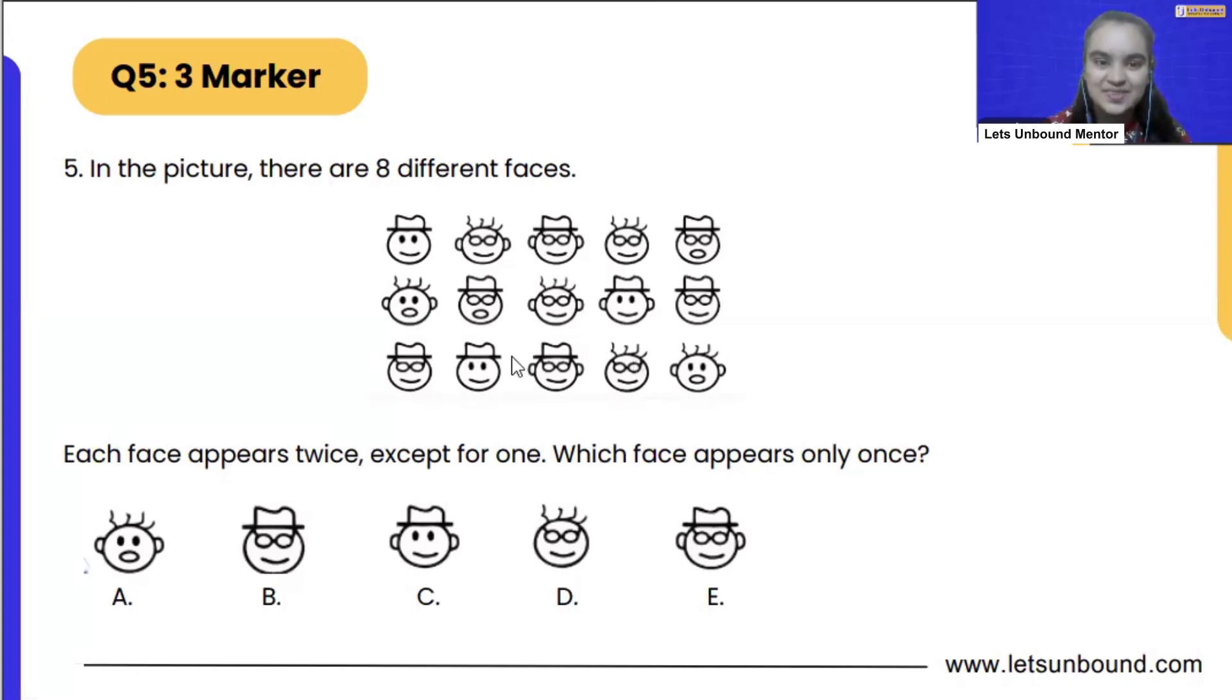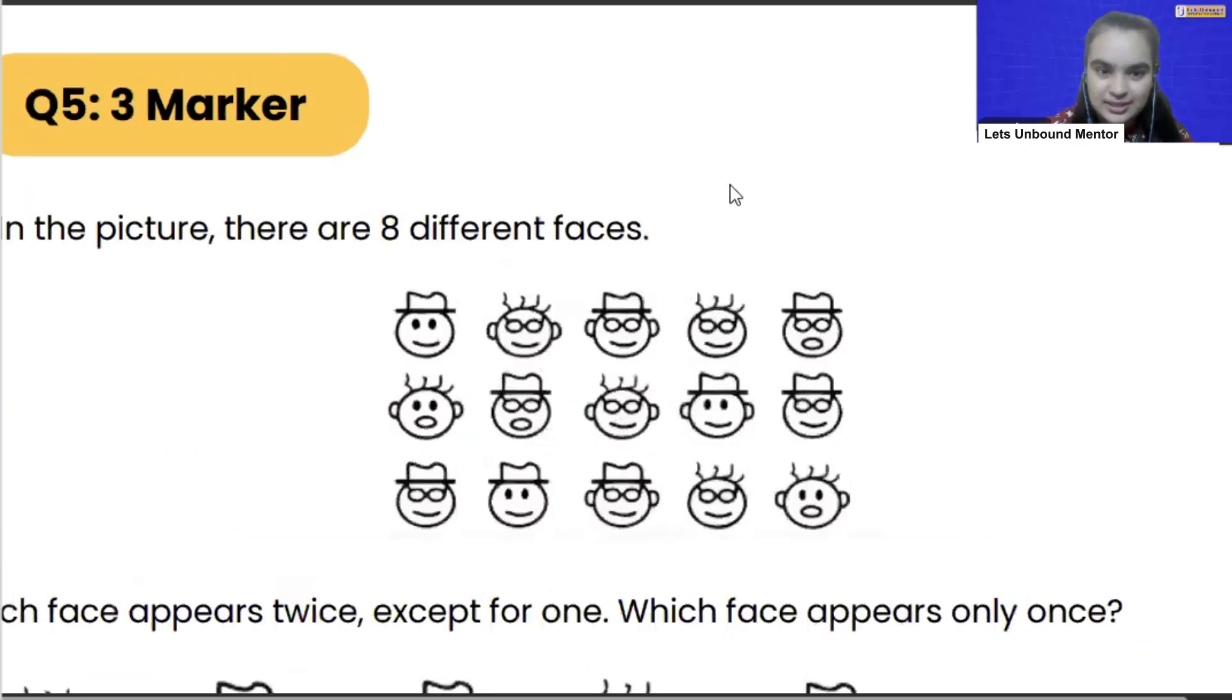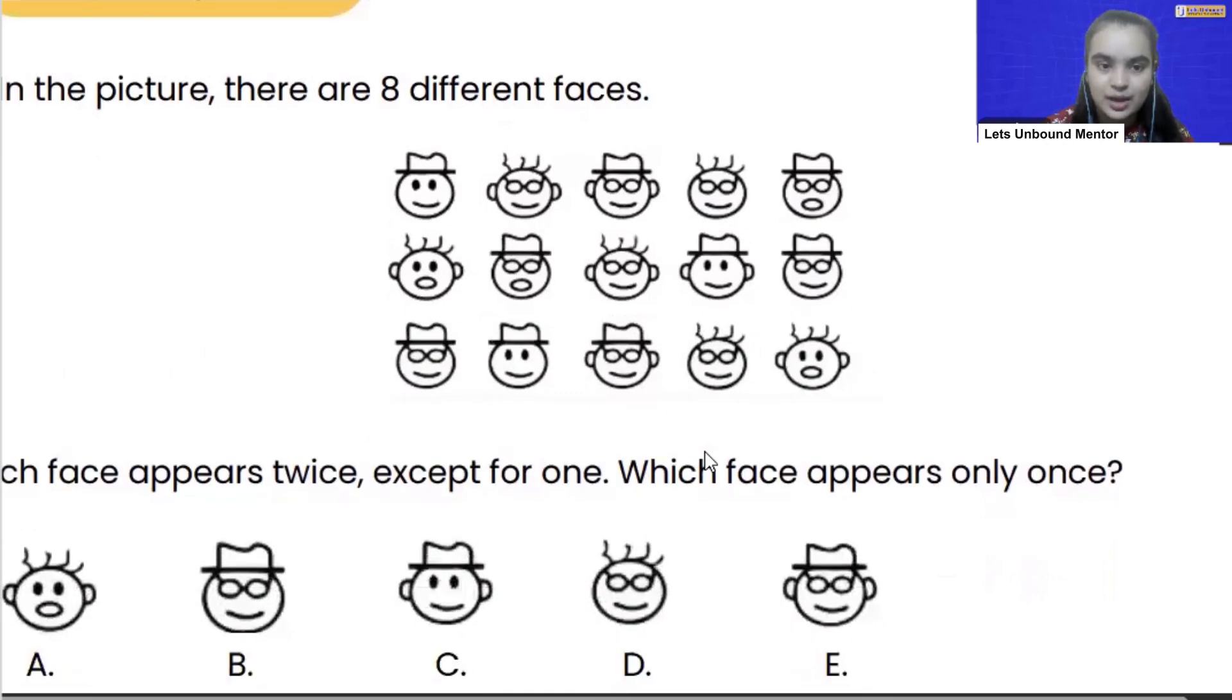try to do it. Let's zoom into the faces. Now, if you look carefully, let's see the options which they have provided, right? Because in the options we are having only five different people, that will be easy to start with. Option A is this face,